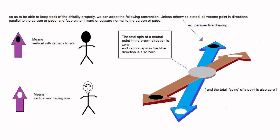Secondly, in order to keep track of the chirality properly, we can adopt the following convention. Unless otherwise stated, all vectors point in directions parallel to the screen or page, and face either inward or outward normal to the screen or page.